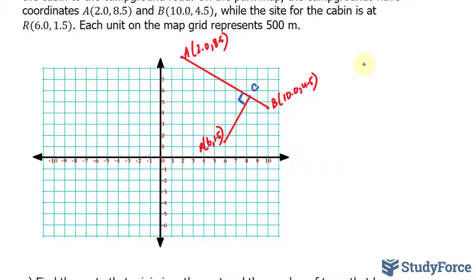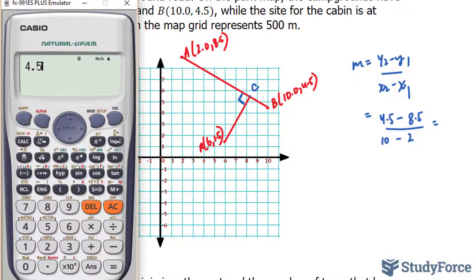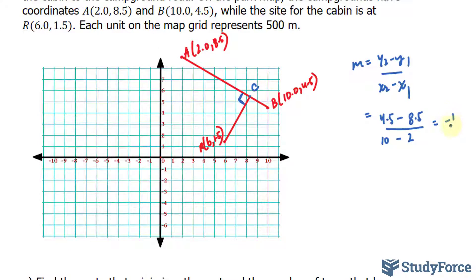Let me show you what I mean. Let's start by finding the slope of A and B. We can find the slope by using the slope formula, and that is equal to y2 minus y1 over x2 minus x1, where M represents the slope. y2 here is 4.5 minus 8.5 over x2 is 10 minus 2. We'll need a calculator for this. 4.5 minus 8.5 divided by 10 minus 2 is 8, and that's equal to negative 1 over 2.